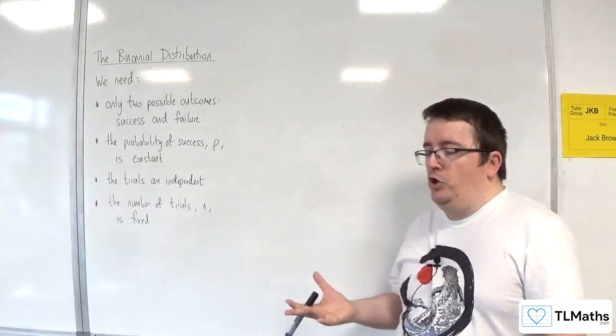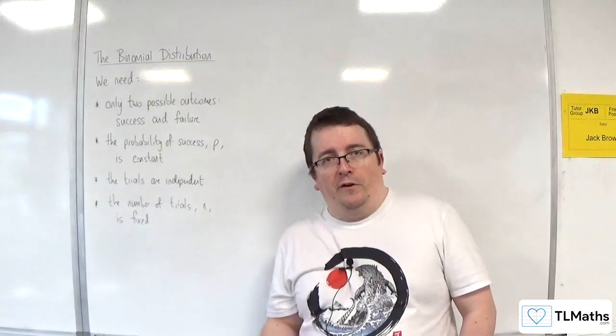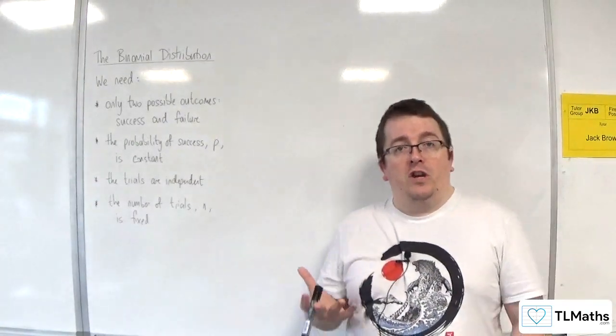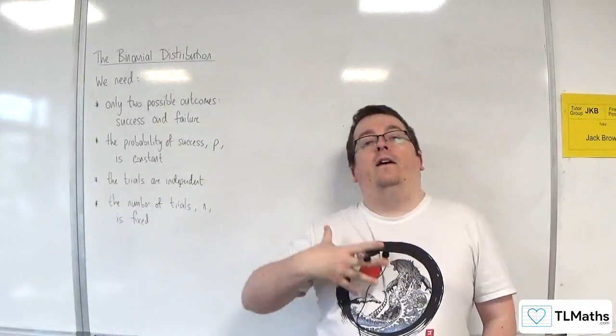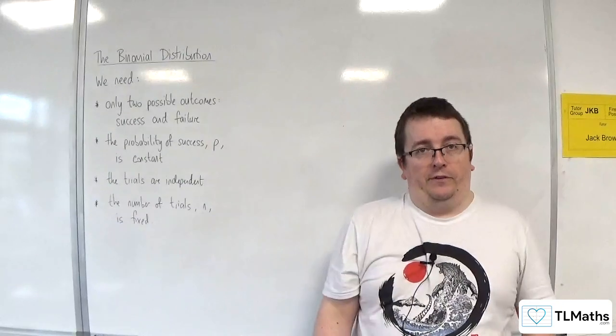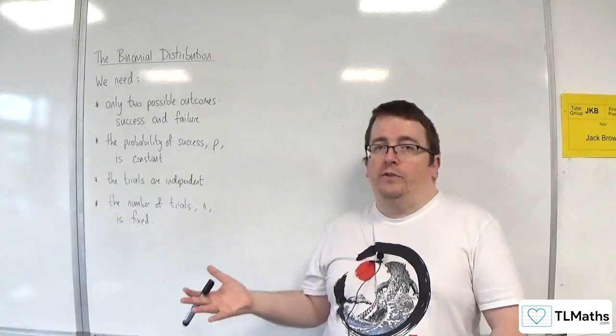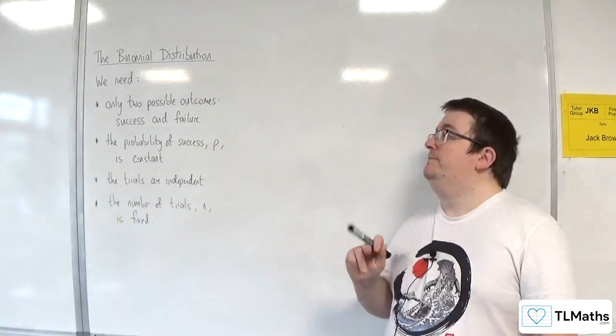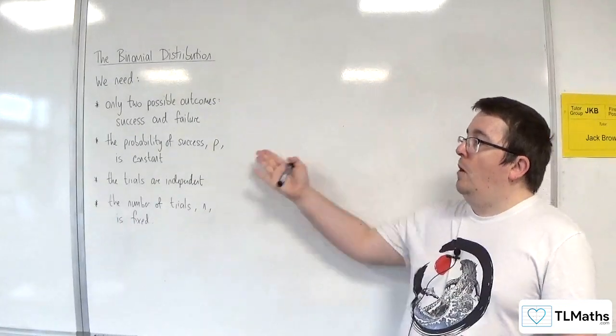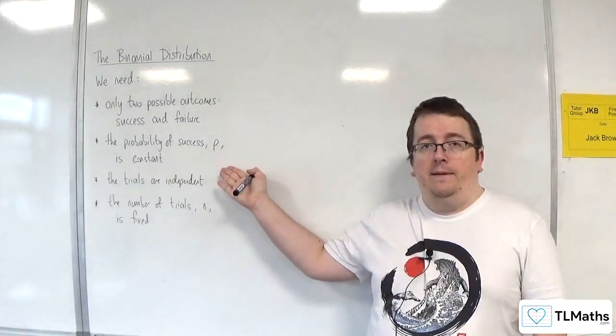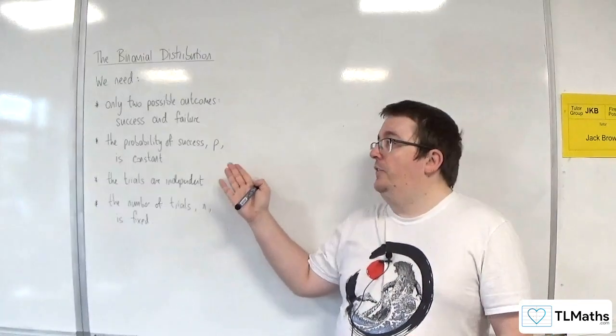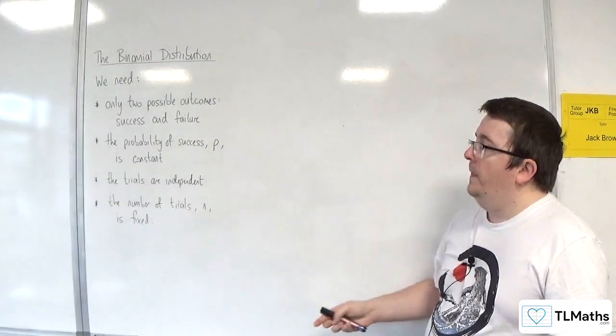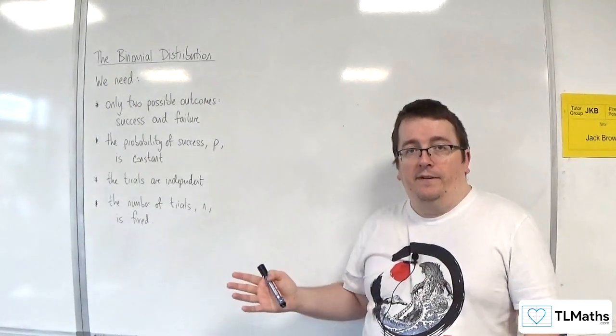The binomial distribution has two possible outcomes. Just like the geometric distribution, you've got success and failure. Either something happens or it doesn't, so there are only two options, hence binomial. You've got a probability of success, P, which is fixed and constant, so that's unchanging throughout the problem. And the trials are independent.